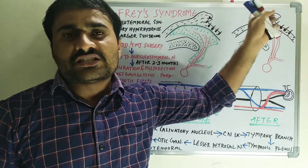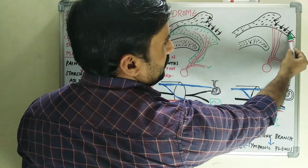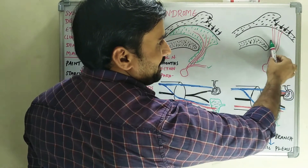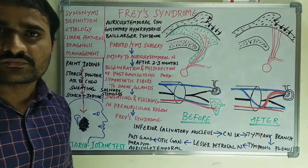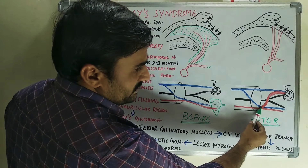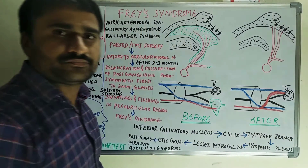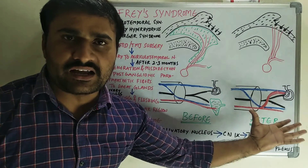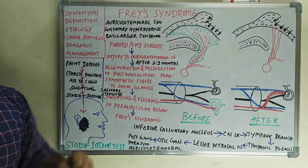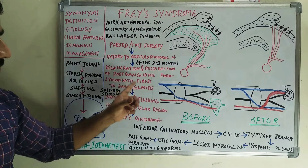Due to regeneration of these post-ganglionic parasympathetic fibers, they are redirected to the sweat glands in the cutaneous structure. You can see in this diagram the red colored ones (parasympathetic nerve fibers) are redirected and connected to the sweat glands. The basic mechanism: injury to the auriculotemporal nerve → during the healing period after two to three months → regeneration and misdirection of post-ganglionic parasympathetic fibers to the sweat glands.